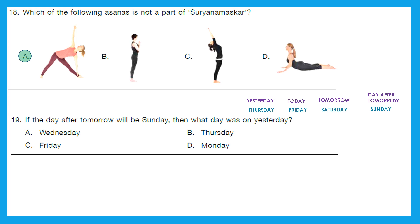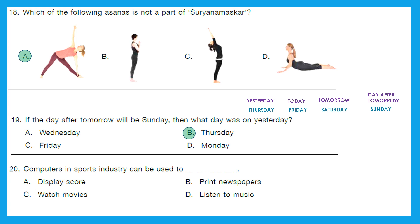Yesterday was Thursday. The right answer is option B — Thursday. Question 20: Computers in the sports industry can be used to display scores, print newspapers, watch movies, or listen to music. The obvious answer is option A — display score.